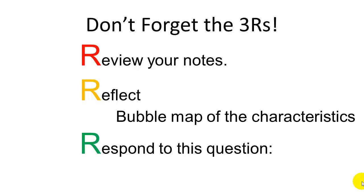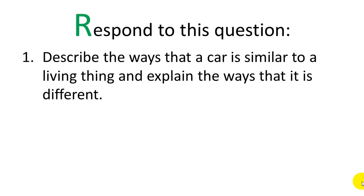And don't forget the three R's. Review your notes and make sure they make sense. Write a reflection, in this case a bubble map of the seven characteristics, and respond to this question. Describe the ways that a car is similar to a living thing, and explain the ways that it is different. Be thorough. Remember, spelling, grammar, punctuation, all count.